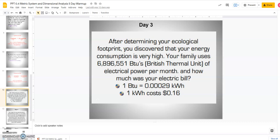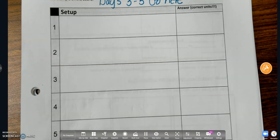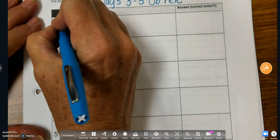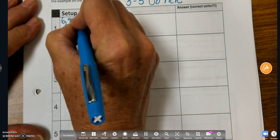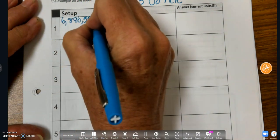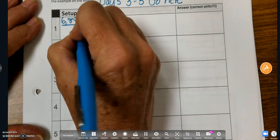So let's look at this. In this problem, it says, After determining your ecological footprint, you discover that your energy consumption is very high. Your family uses 6,896,551 BTUs of electrical power per month. Per means slash. So that's this divided by month. How much was your electric bill? So there is my given, and these are my conversions. So I'm going to put this in number one of the setup. So my given is 6,896,551 BTUs per month.